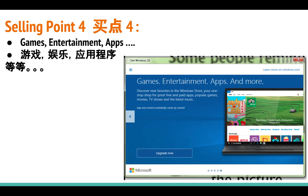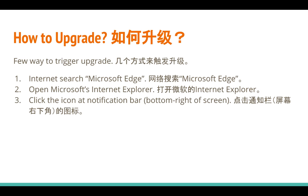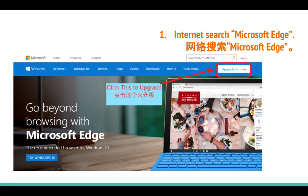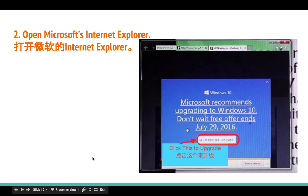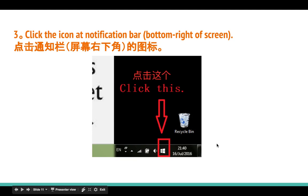Selling point 4: games, entertainment apps, and more — you can download them in the Windows Store. So how do we upgrade to Windows 10? There are a few steps. First, go to the internet and search for Microsoft, and they will link you to a page where you can get the free upgrade. Option 2 is to open Microsoft Edge and when you open it, a pop-up screen will appear.